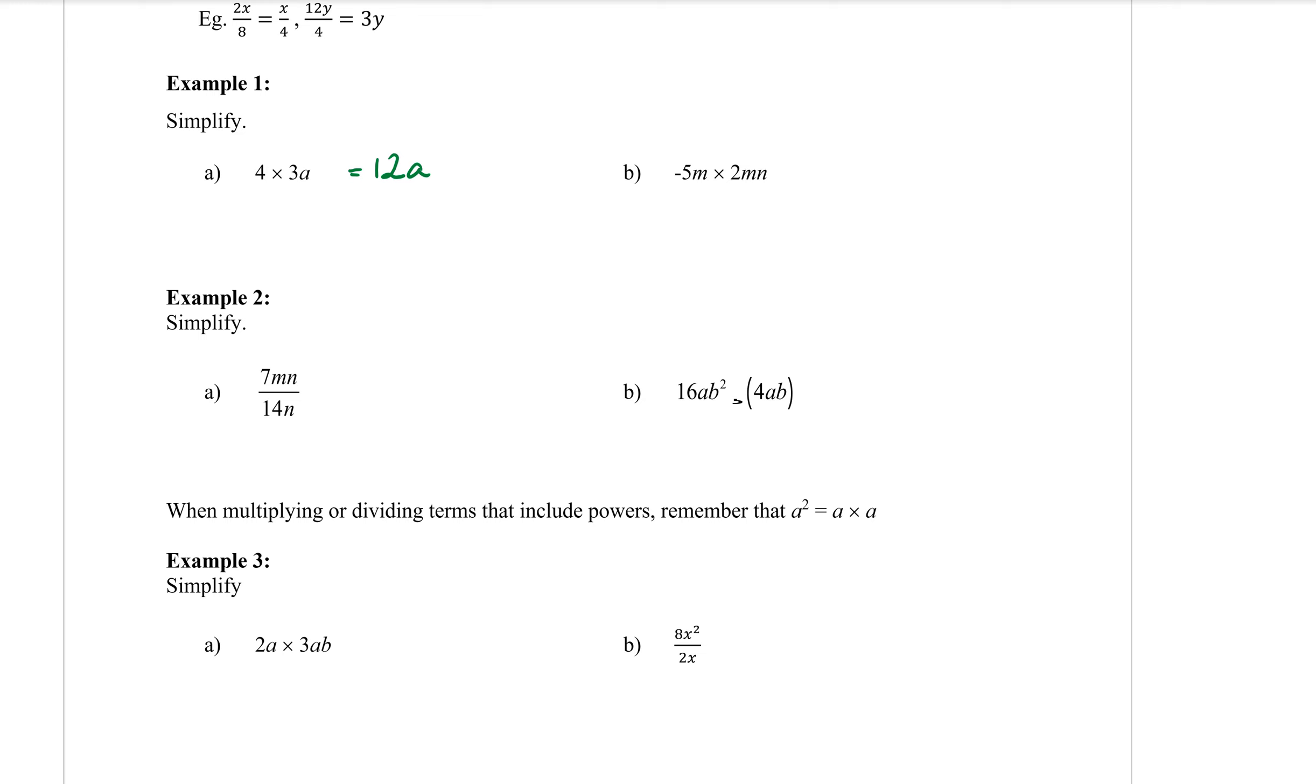Question B, same deal. I'm multiplying, so I multiply the numbers. It doesn't matter that one of them is a negative number. What is negative 5 times 2? Negative 10. Now I have M for the first one and MN in the second one. They're going to collect up. What happens when you have M times another M? M squared. We don't write MMN like that. Instead, we go M squared, meaning there's two of them, and also an N. So there were two M's and one N.